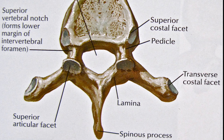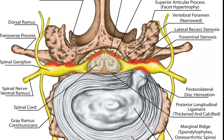Two special vertebrae are the atlas and axis, on which the head rests. A typical vertebra consists of two parts: the vertebral body and the vertebral arch. The vertebral arch is posterior, meaning it faces the back of a person. Together, these enclose the vertebral foramen, which contains the spinal cord.